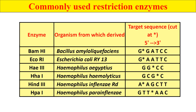Here are examples of some commonly used restriction enzymes. BamHI is taken from the organism Bacillus amyloliquefaciens, and its target sequence or restriction site is G-G-A-T-C-C; the star indicates that it cleaves between the two G residues. Similarly, EcoRI from E. coli RY13 has the recognition sequence G-A-A-T-T-C and cleaves between G and A. These are examples of commonly used restriction enzymes.